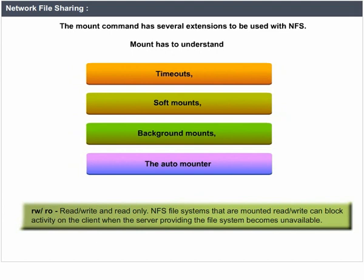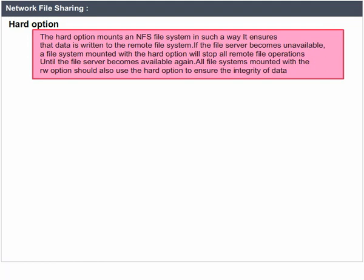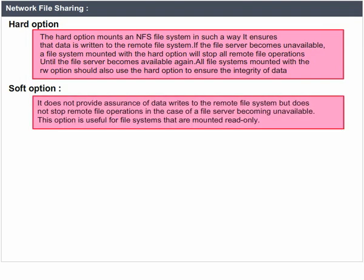Hard option: the hard option mounts an NFS file system in such a way that it ensures data is returned to the remote file system. If the file server becomes unavailable, a file system mounted with the hard option will stop all remote file operations until the file server becomes available again. All file systems mounted with the read/write option should also use the hard option to ensure the integrity of data. Soft option: it does not provide assurance of data writes to the remote file system, but does not stop remote file operations in case of a file server becoming unavailable. This option is useful for file systems that are mounted read-only.